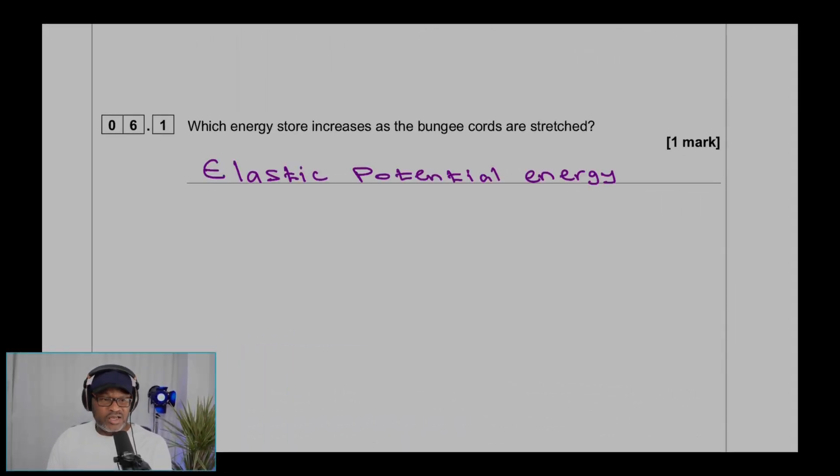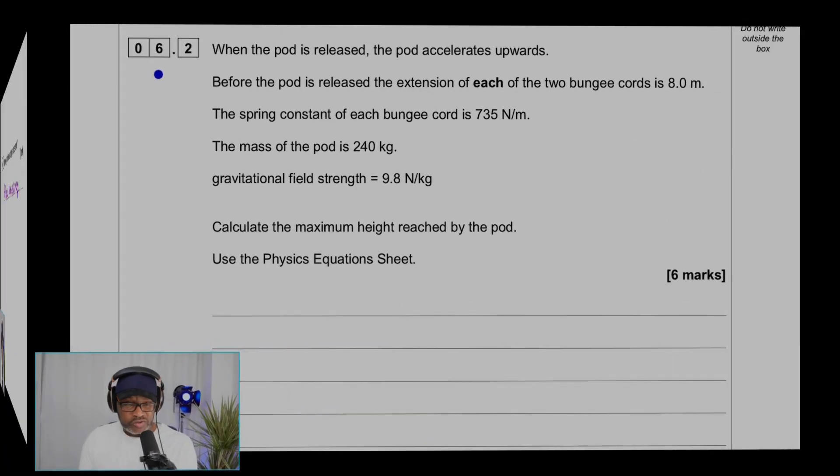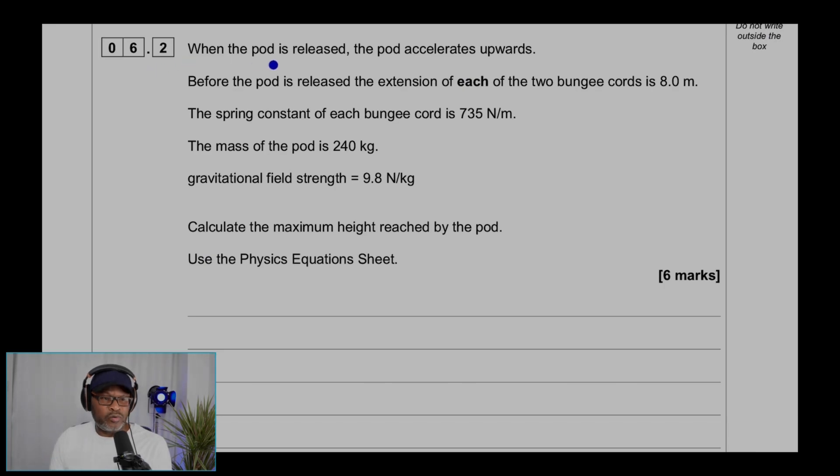Question 6.2: When the pod is released, the pod accelerates upwards. Before the pod is released, the extension of each of the two bungee cords is 8 meters. The spring constant of each bungee cord is 735 newtons per meter, and the mass of the pod is 240 kilograms.